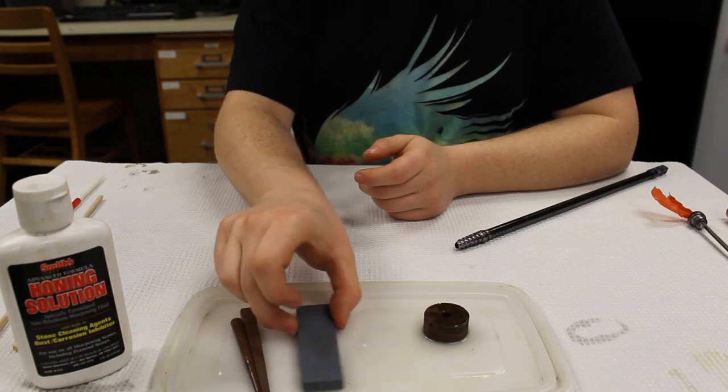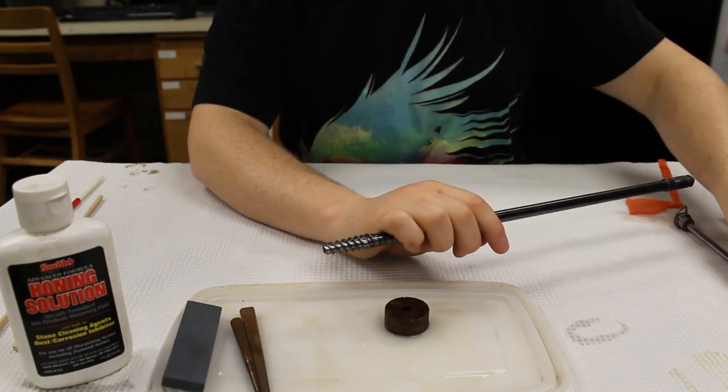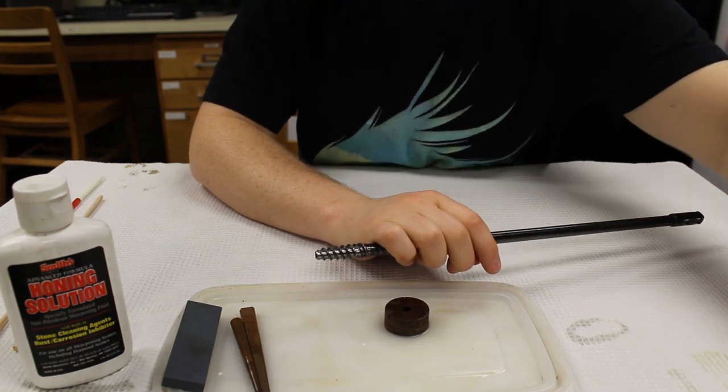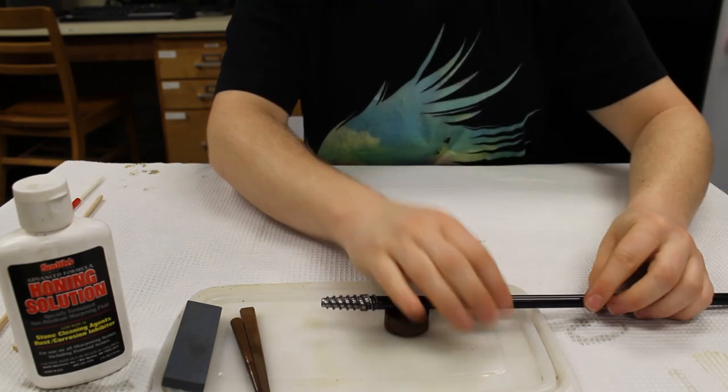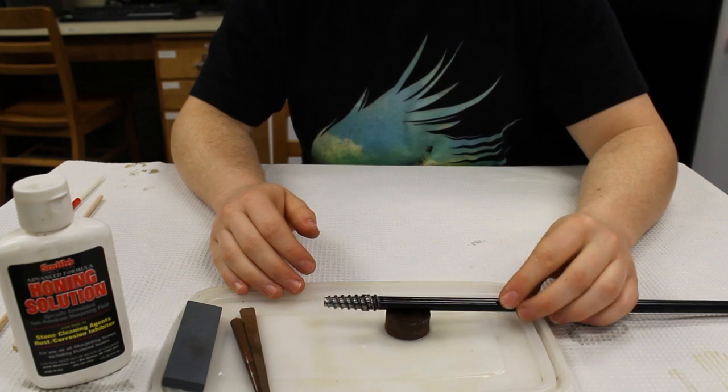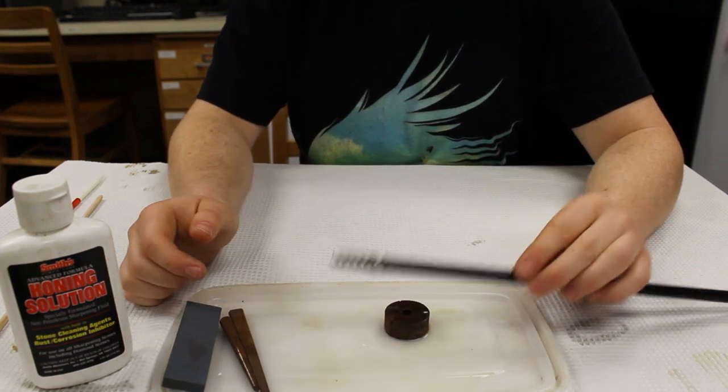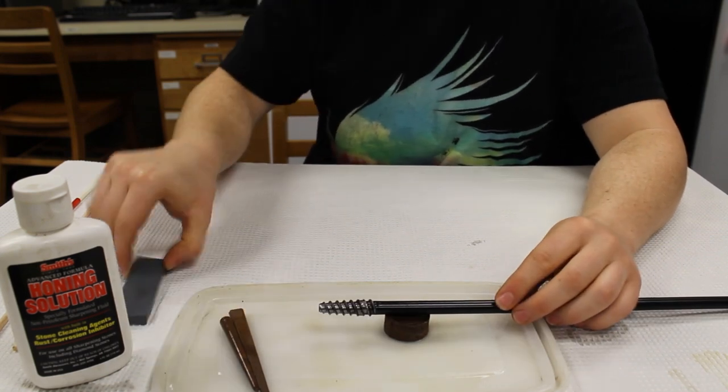When sharpening, you want to make sure that the stones and the auger itself are balanced on the block. So whichever one is not being moved, you want to have that on the block. So in this case, it'll be the auger for the first stone.